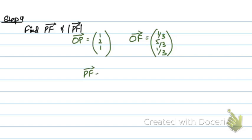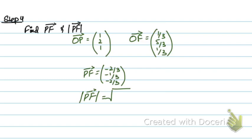We find vector PF as OF minus OP. So this will be (1/3 − 1, 5/3 − 2, 1/3 − 1) = (−2/3, −1/3, −2/3). I have this vector PF and all I need to do is find its magnitude, which gives the perpendicular distance. The magnitude is √((2/3)² + (1/3)² + (2/3)²), which equals √1 = 1. So the perpendicular distance from point P to the plane is 1.